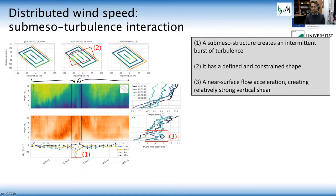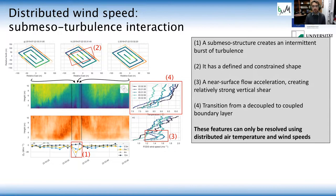And additionally, the boundary layer transitions from a decoupled state. So you can see here, weakly stable above and then strongly stable below to a coupled state where you see it's weakly stable throughout.